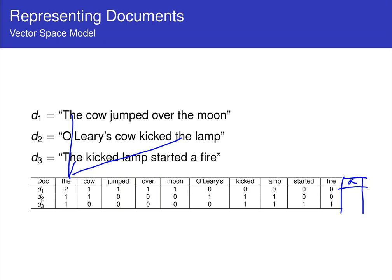So I use the word the cow jumped over moon, O'Leary's kick, lamp started a fire. And what I do is I say, document 1, the word the. How many times does the word the appear in document 1? Twice. How many times does the word cow appear? Just once. How many times jumped? Once. Over. Once. Moon. Once. O'Leary's is not present in document 1. So 0 times. Kicked 0 times. Lamp 0 times. Started 0 times. Fire appears 0 times in document 1. And A appears 0 times in document 1.